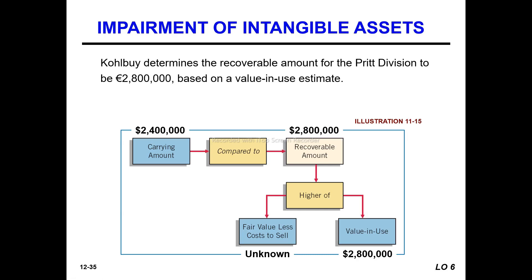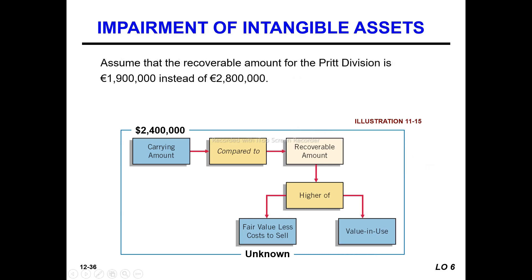Do you have any impairment? There is no impairment because the carrying value of the asset is less than the recoverable amount. The recoverable amount equals the carrying value of $1 million. Assume the recoverable amount for the Preet division is $1 million, and the carrying value is also $1 million.